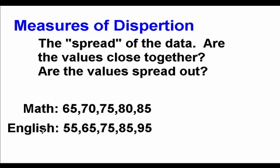So here I have two test scores, two groups of test scores, one in a math class and one in an English class. And if we found the mean of each of these, we would find that the mean for both of them is 75.